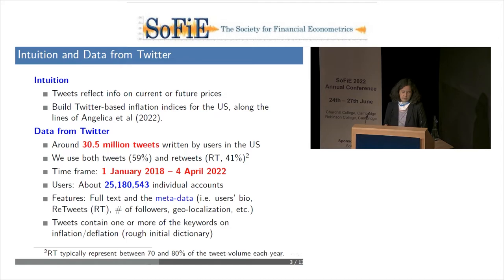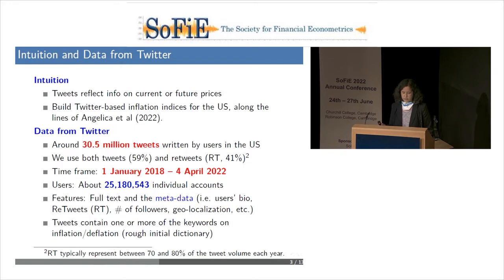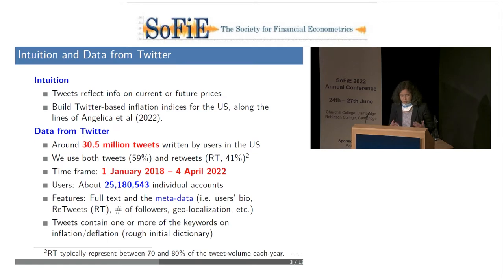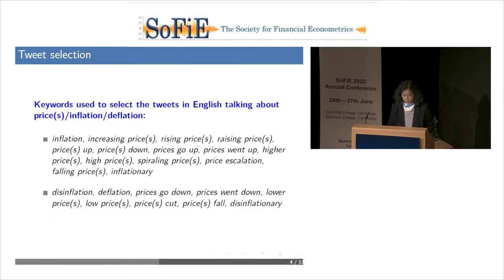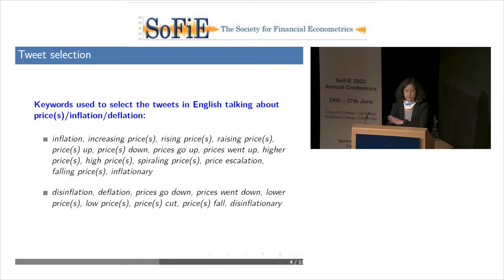The features available are full text and metadata, including user bios, retweets, follower counts, and rough geolocation. The key is to narrow down tweets to the most relevant ones. We require tweets to contain one or more keywords on inflation or deflation—a rough initial dictionary to seed the latent Dirichlet algorithm. These are keywords used to select English tweets talking about prices, inflation, or deflation. There's some subjectivity in identifying these terms. We also look at the distribution of user-identified biographies, showing how users identify their main area of focus.